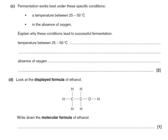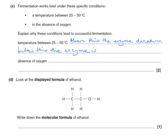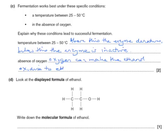Fermentation works best under these specific conditions. The temperature between 25 and 50 degrees and in the absence of oxygen. Explain why these conditions lead to successful fermentation. Temperature below 20 or between 25 and 50 degrees and above this, the enzyme denatures. Temperature below this, the enzyme is inactive. So there we've said why the 25 to 50 is the best range of temperatures. The absence of oxygen can make the ethanol oxidise to ethanoic acid.